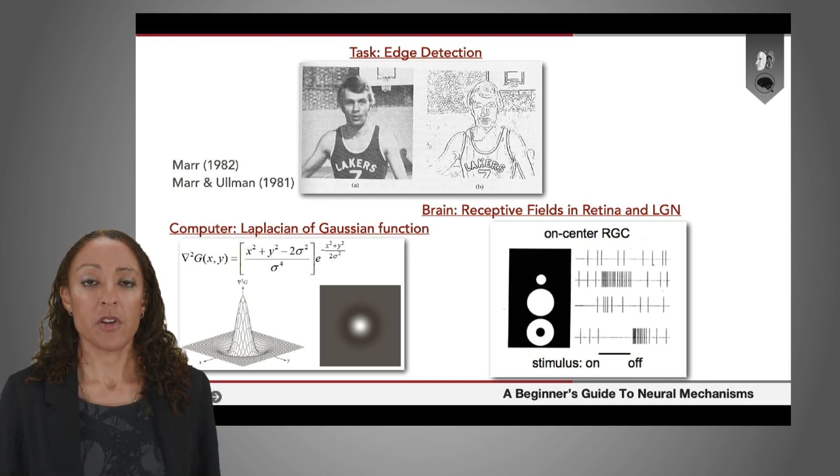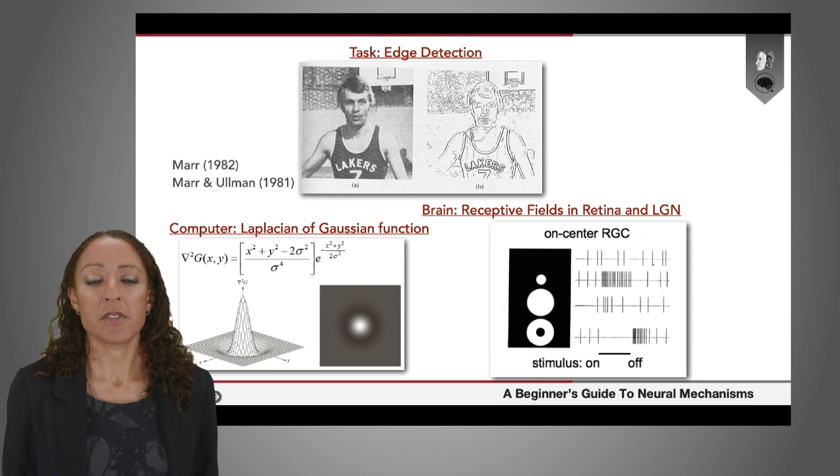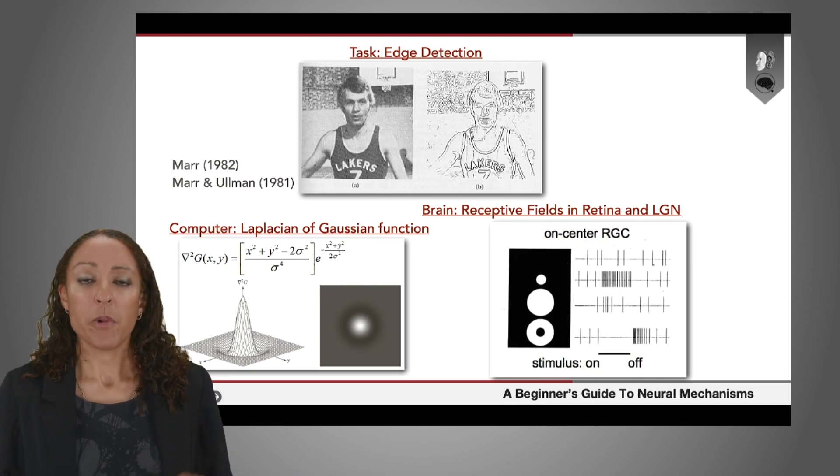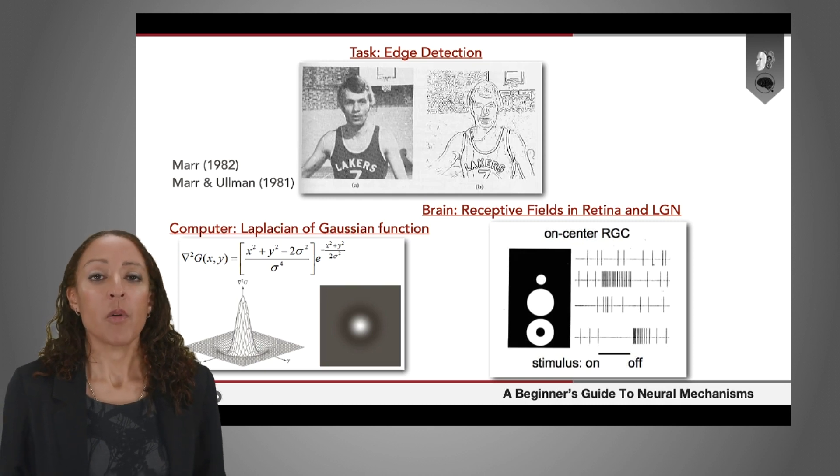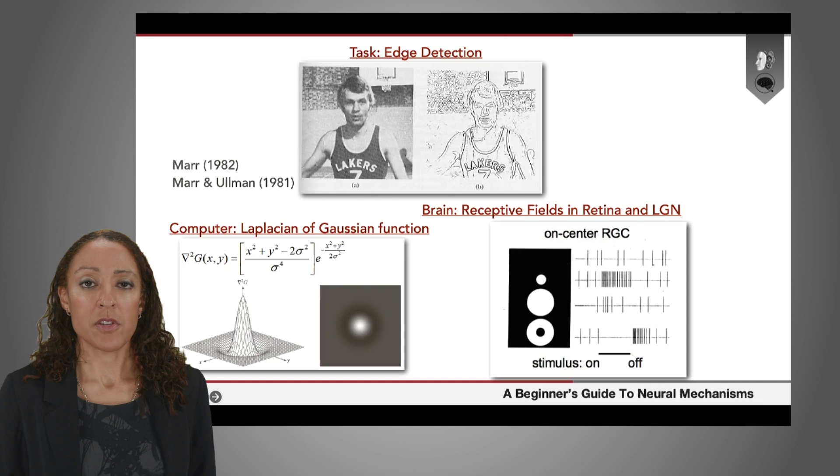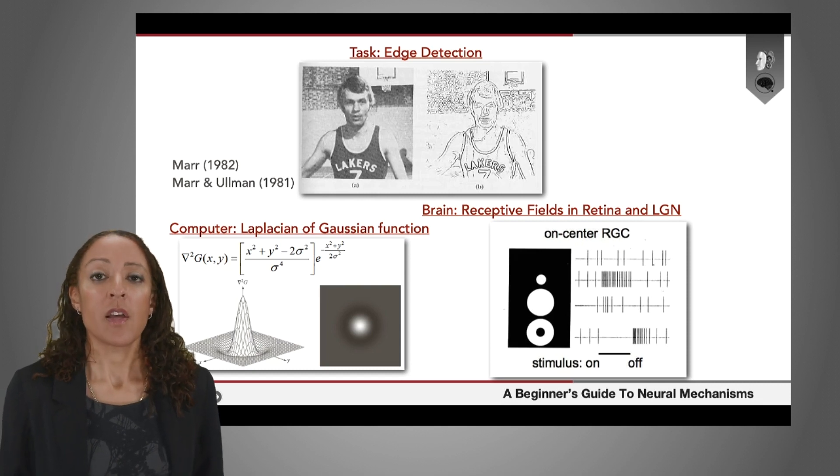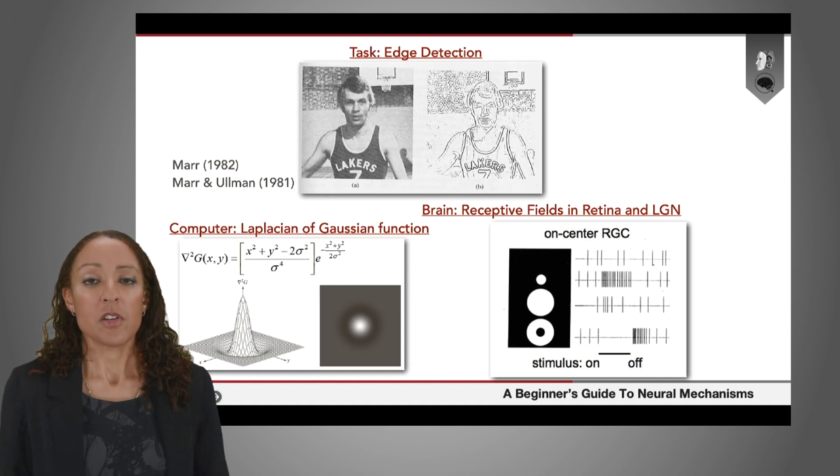if you think of a pixelated array of light patterns like you get with the photoreceptors in the eye, one of the information processing tasks that you can do is look for where the edges are in the image. And one way to do that mathematically is to use this Laplacian of Gaussian transform on the image. And Marr was arguing that that's what the cells in the retina themselves were doing to that pixel array at the photoreceptor.